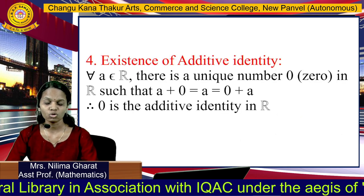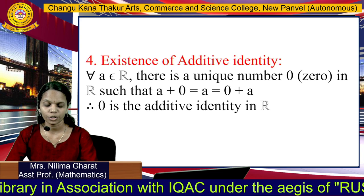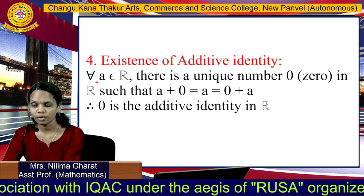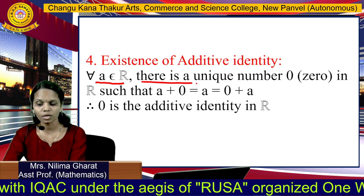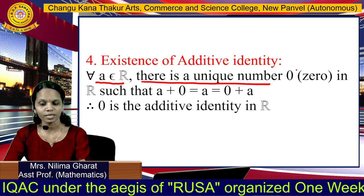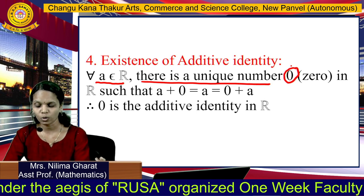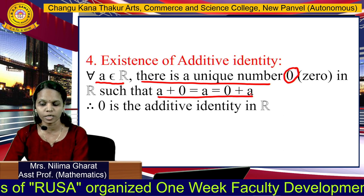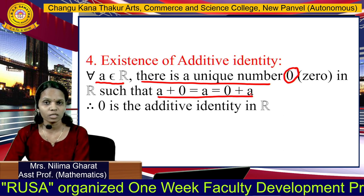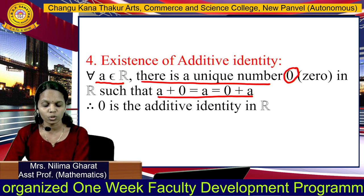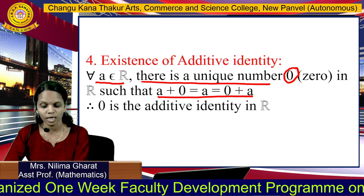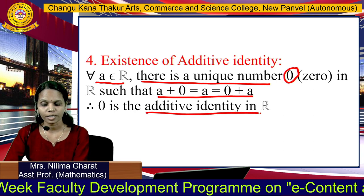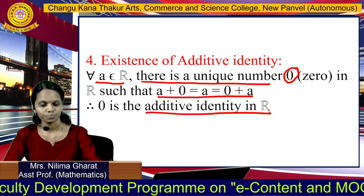The fourth property is the existence of additive identity. For any real number A, there is a unique real number 0, which also belongs to R, such that A plus 0 equals A equals 0 plus A. So 0 is the additive identity in the set of real numbers.